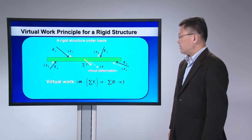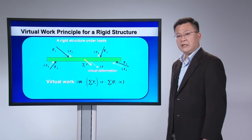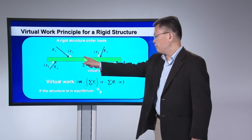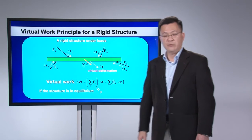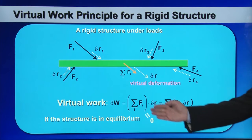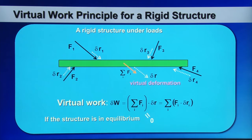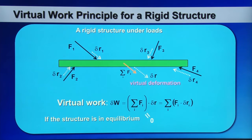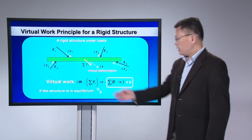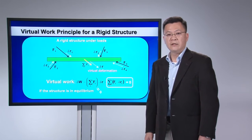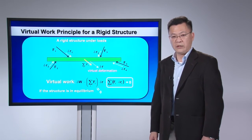Assuming that this structure is under equilibrium, the summation of forces acting on the structure should be equal to zero. Substituting this condition into the virtual work expression shows that the virtual work must equal zero. We are going to use this concept to explain why the Müller-Breslau principle works.